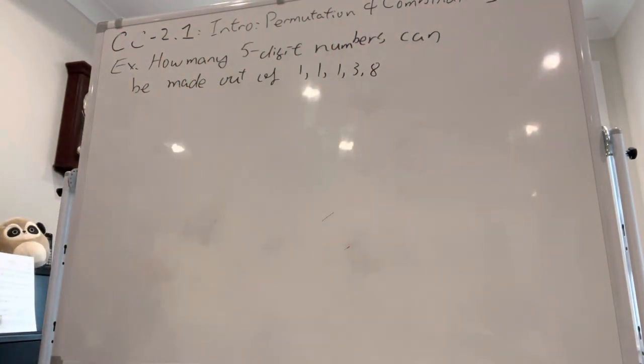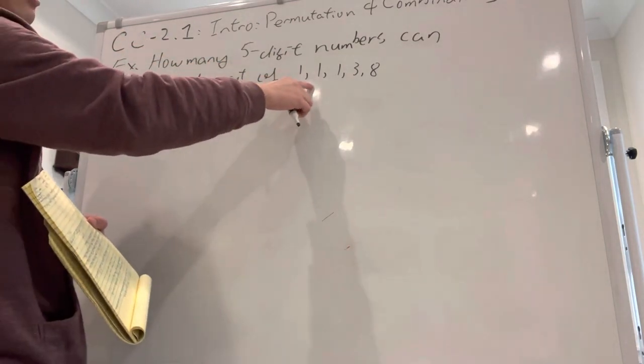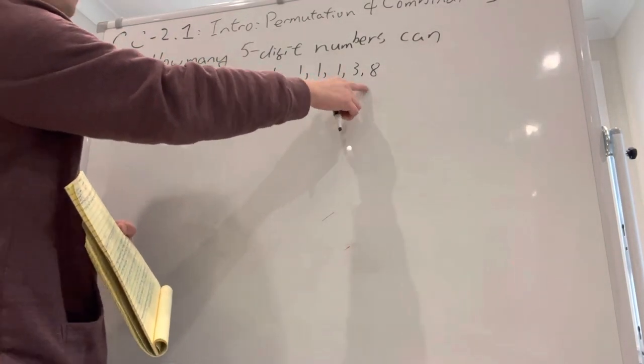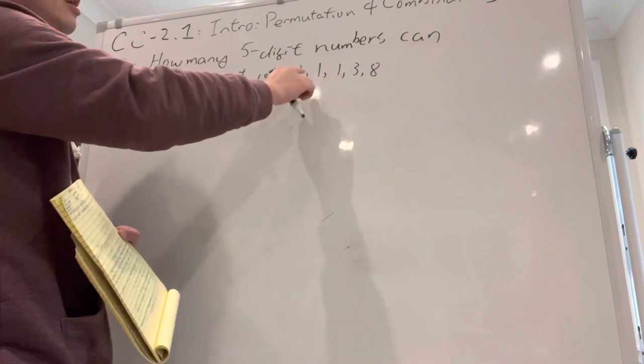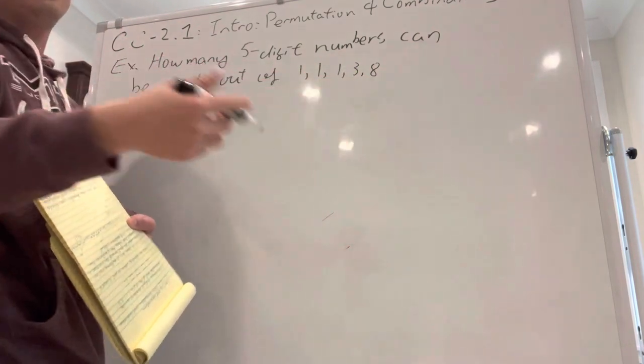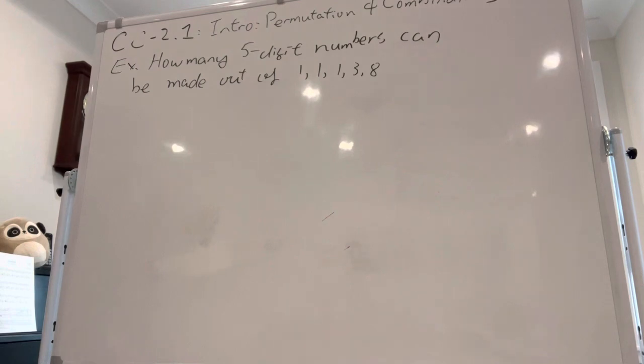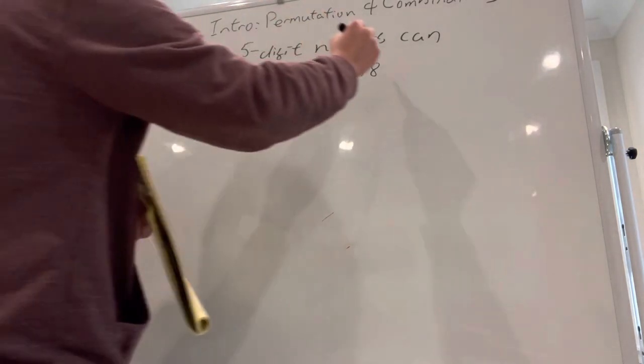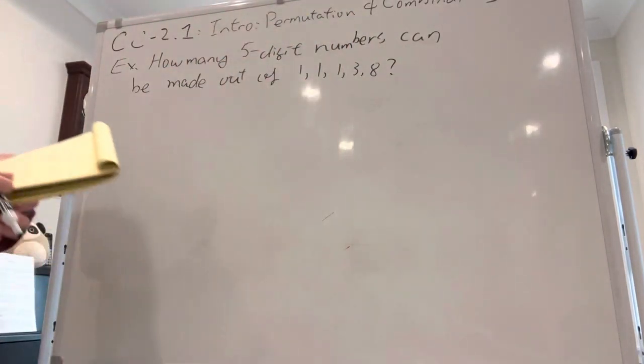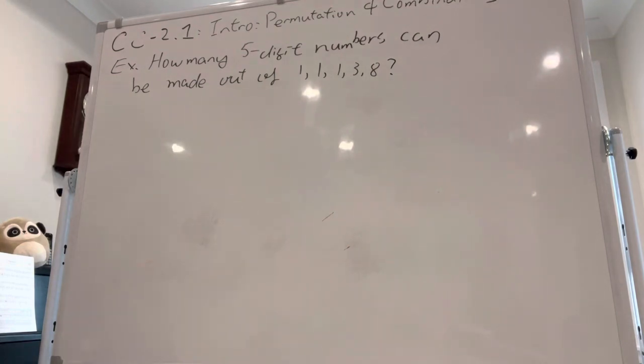For example, 11,138 is one. 81,113 is another, but how many different ways can we make numbers out of this? I'll give everyone like 10 seconds before I explain how to solve this. This is an intro to permutation and combination.